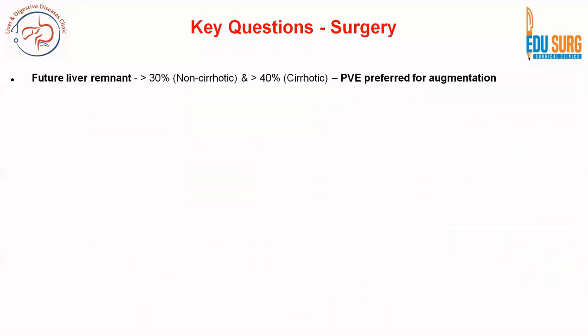When it comes to surgery, future liver remnant assessment is very important. We perform CT liver volumetry: if the volume of future liver remnant is greater than 30% in non-cirrhotic and greater than 40% in cirrhotic patients, there is enough volume. If the future liver remnant is not adequate, portal vein embolization is the preferred strategy. Sequential TACE followed by PVE can further augment the liver.